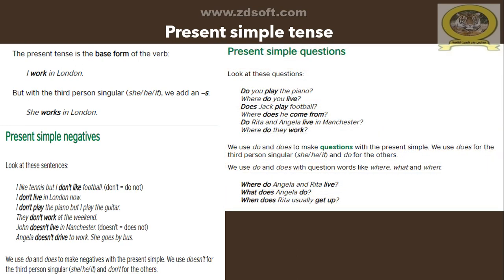What about the present simple questions? Look at these questions: 'Do you play the piano?' 'Where do you live?' 'Where does he come from?' 'Do Rita and Angela live in Manchester?' 'Where do they work?' We use do and does to make questions with the present simple. We use does for the third person singular — he, she, it — and do for the others. We can also use do and does with question words like where, what, and when.